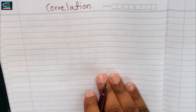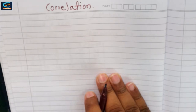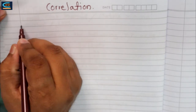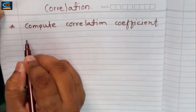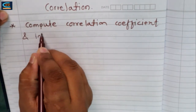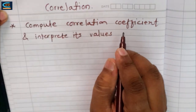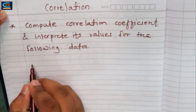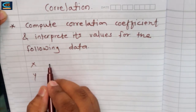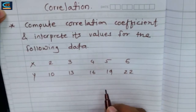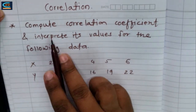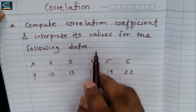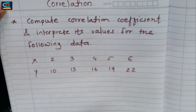Hello students. In this video we are going to see correlation coefficient and its interpretation. Consider an example: compute the correlation coefficient and interpret its values for the following bivariate data given in x and y terms.